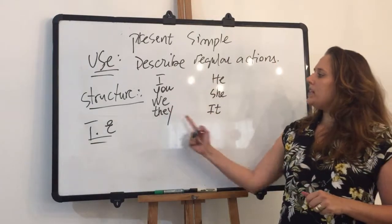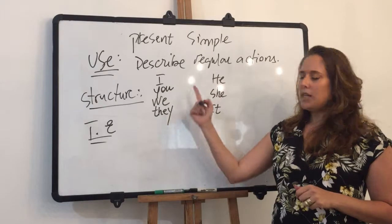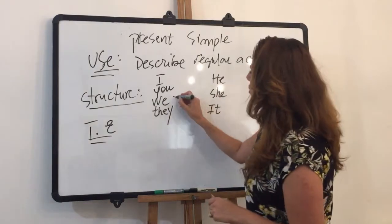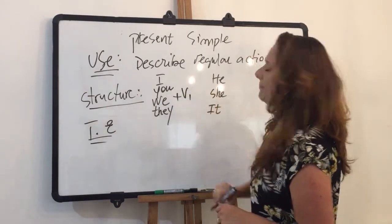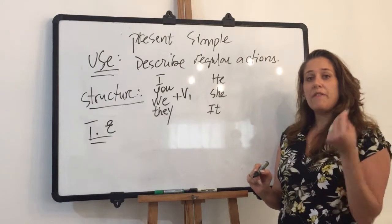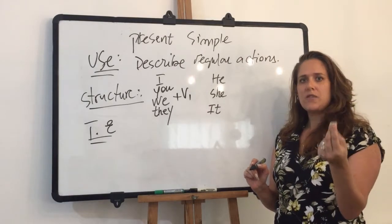When I talk about the first group — I, you, we, and they — my structure is V1. What is V1? It is the verb in its base form.